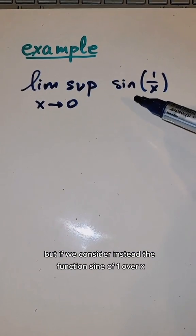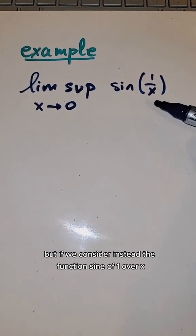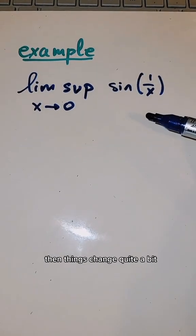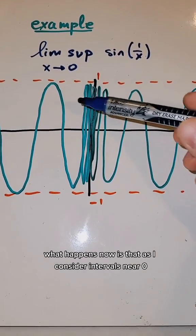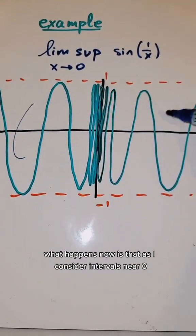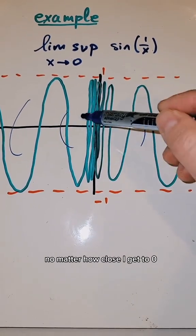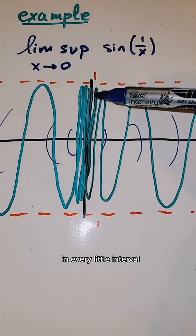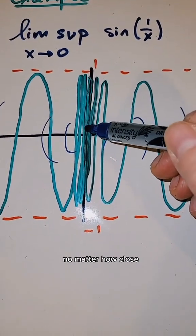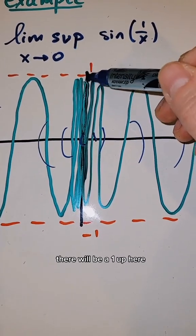But if we consider instead the function sine of one over x, without that x in front, then things change quite a bit. What happens now is that as I consider intervals near zero, no matter how close I get to zero, there will be values that are one in every little interval. No matter how close, there will be a one up here.